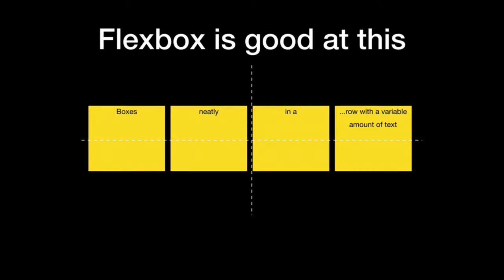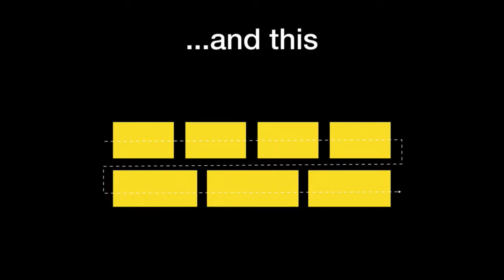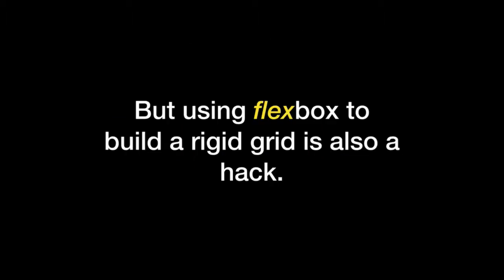The frameworks that many of us have probably been using hid away a lot of this complexity. A few years ago, it seemed like Flexbox was going to change all this. And in some ways it did. Suddenly we could put elements side by side, make them equal height, without resorting to hard-coded heights or JavaScript. We could also easily do certain things without any trickery, and we could even wrap things on multiple rows. But using Flexbox to build a grid in two dimensions is also a hack. So those frameworks just transitioned to Flexbox.